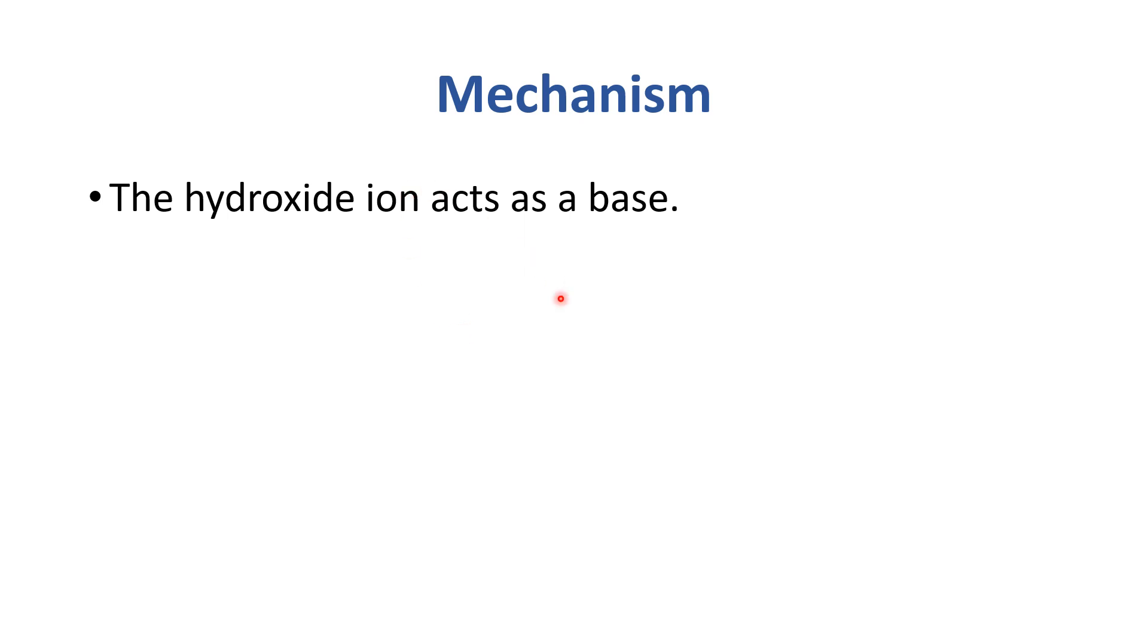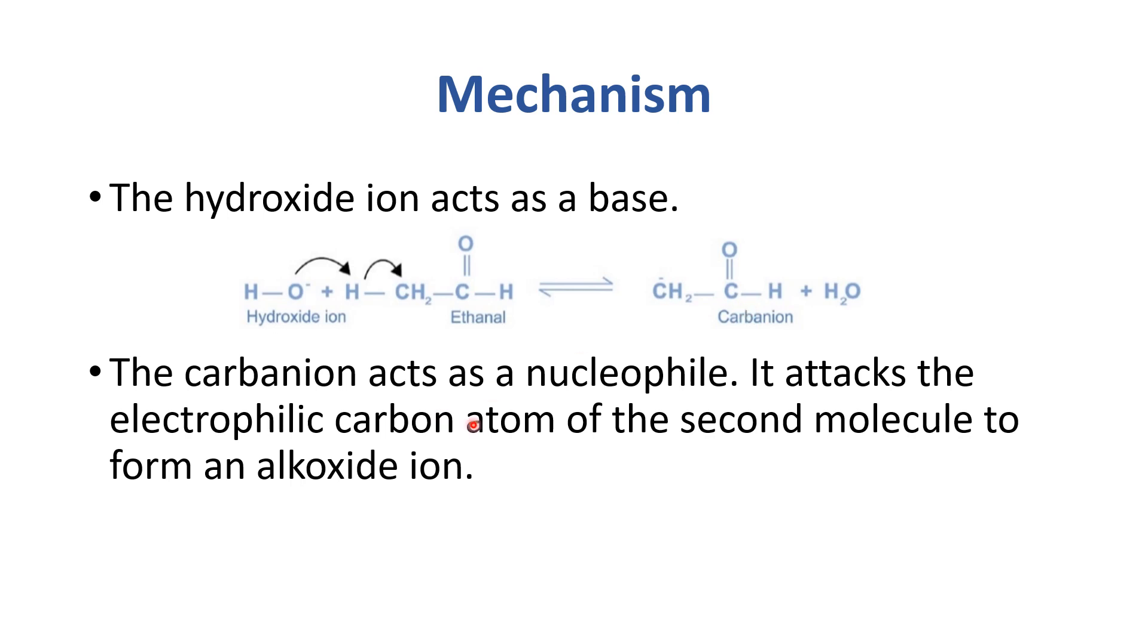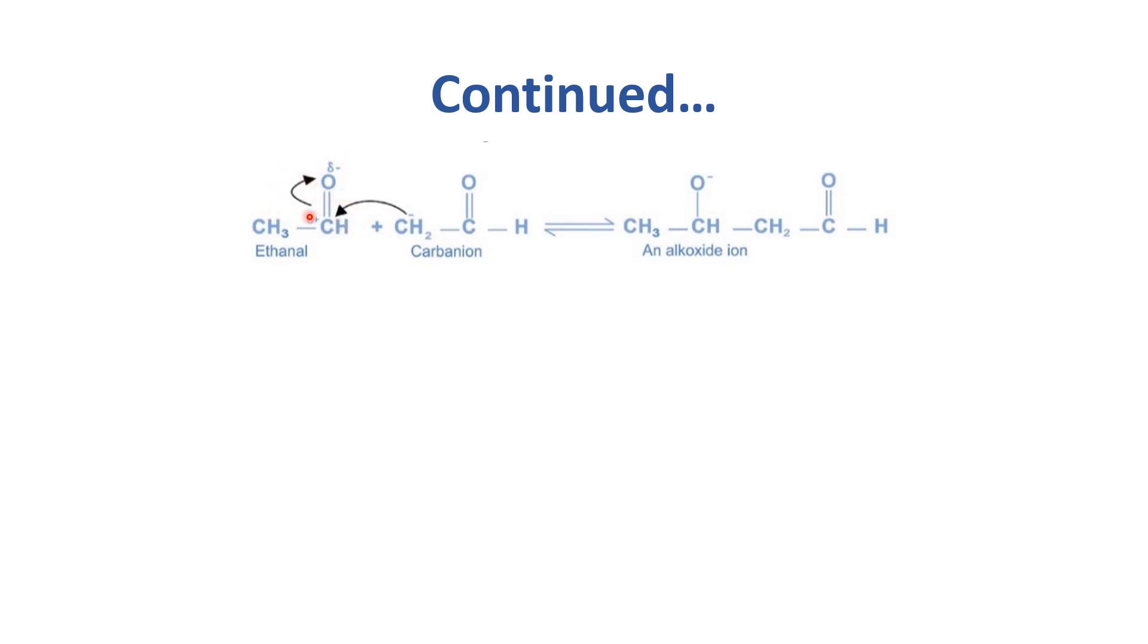Let's see the mechanism. The hydroxide ion acts as a base. So hydroxide ion attacks on this hydrogen atom which is in the methyl group. And this hydrogen will detach and CH2 will be negatively charged. These two electrons transfer and it will form a carbanion. Carbanion attacks as a nucleophile on the electrophilic carbon atom of the second molecule to form an alkoxide ion. So the first step is carbanion formation. The carbanion has attacked on this electrophilic carbon atom of another carbonyl molecule and it will form an alkoxide ion. Here is the addition product and this negative charge is transferred to oxygen. Alkoxide removes a proton from water to form aldol.